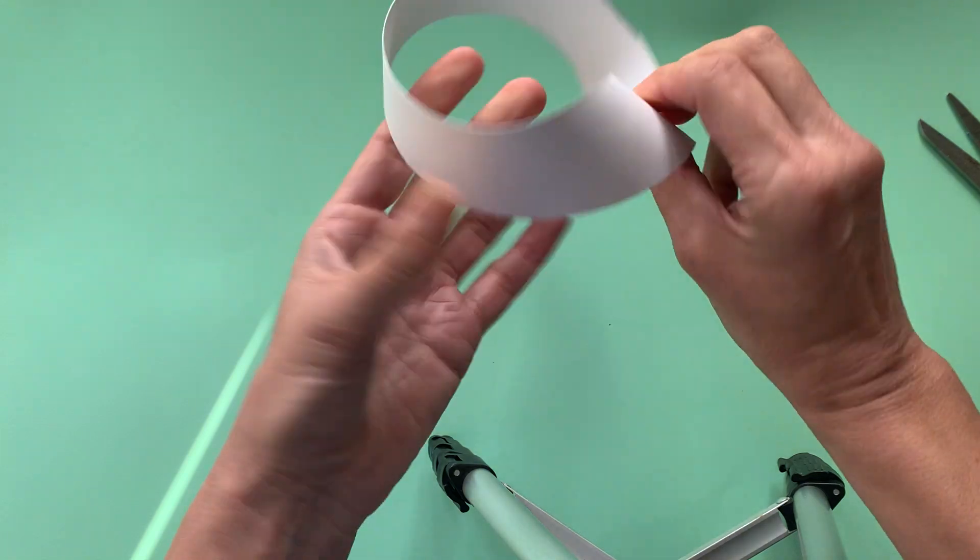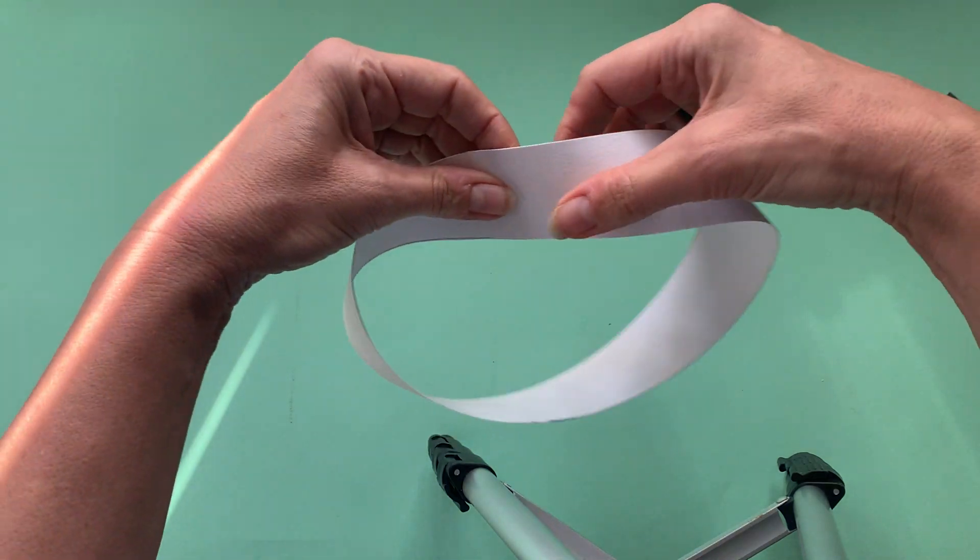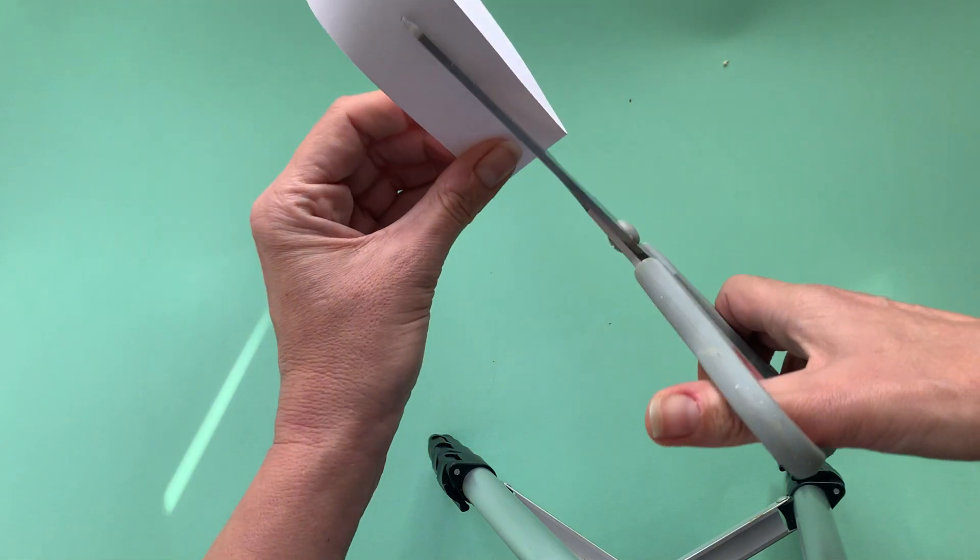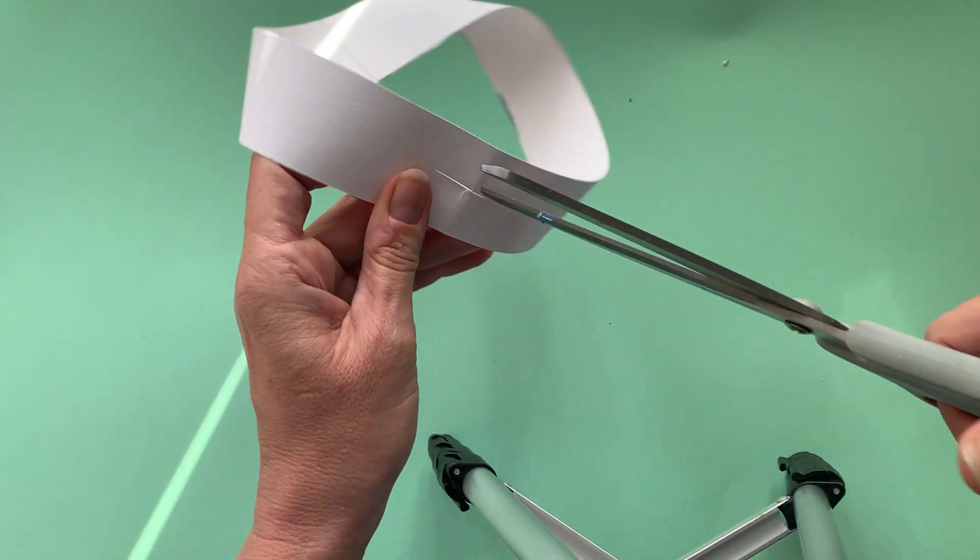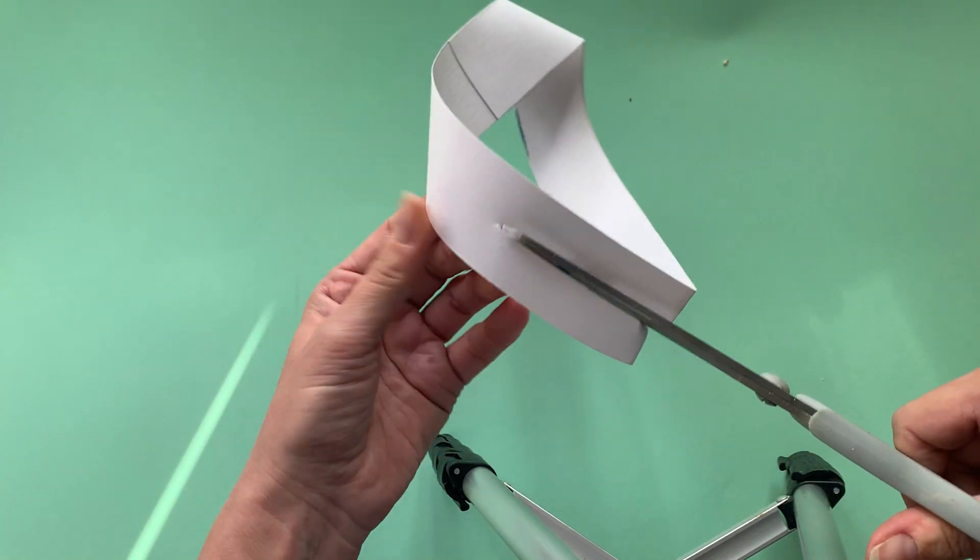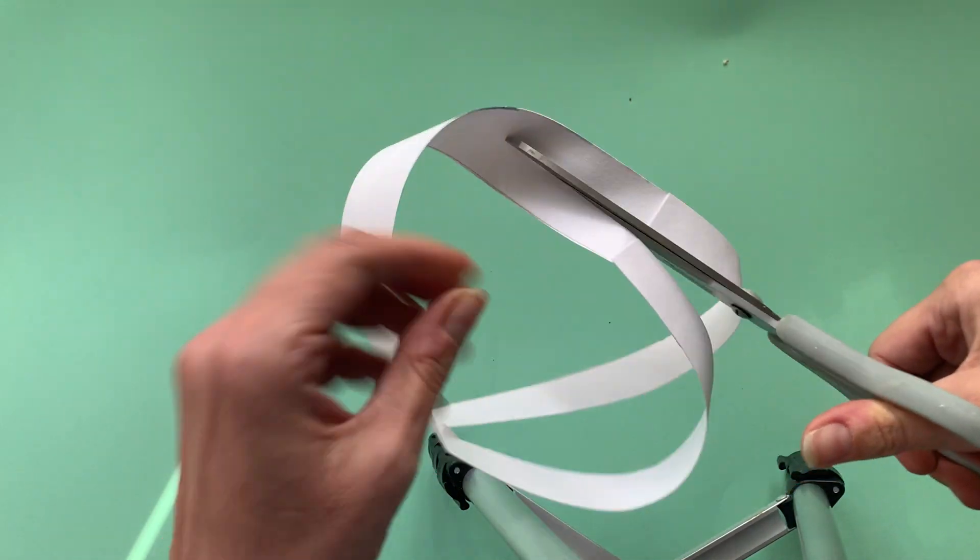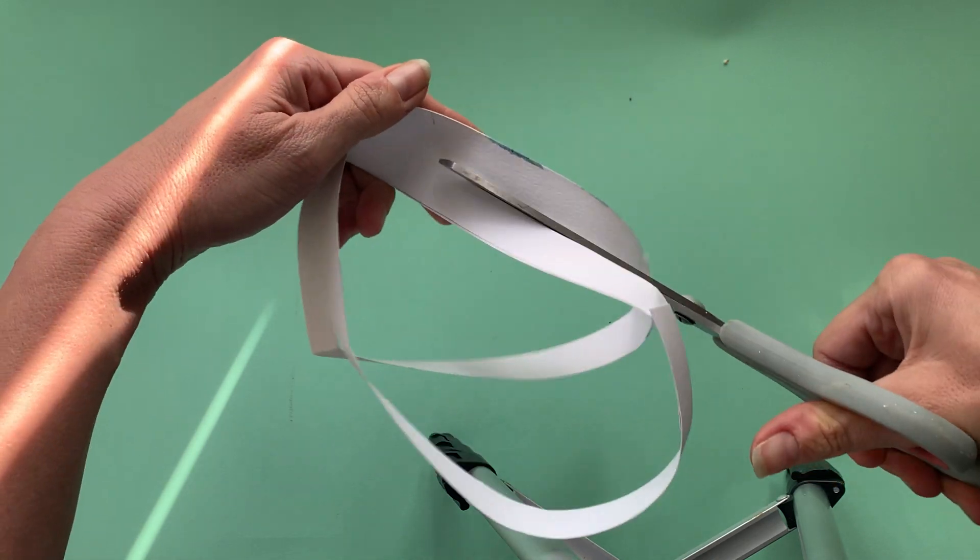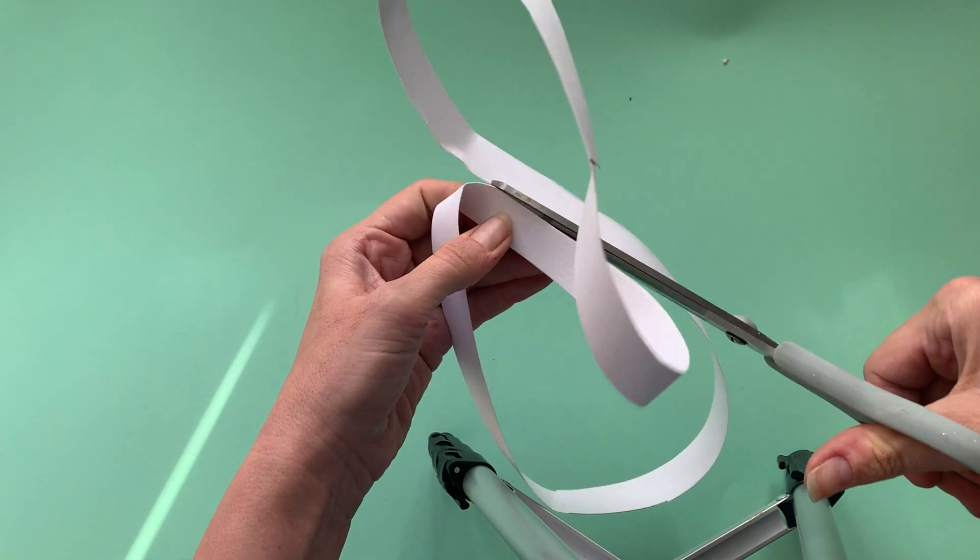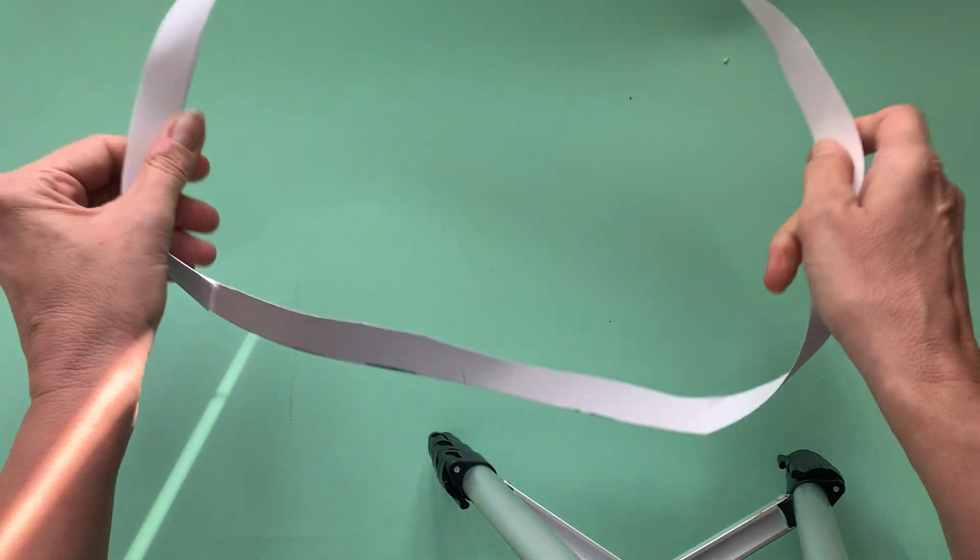There it is, a half twist. So again, our one piece of paper had two sides and it's connected in a loop now with a twist. I'm going to do the same thing, cut it in half down the middle. In the previous example, I had two loops, and now I have one.